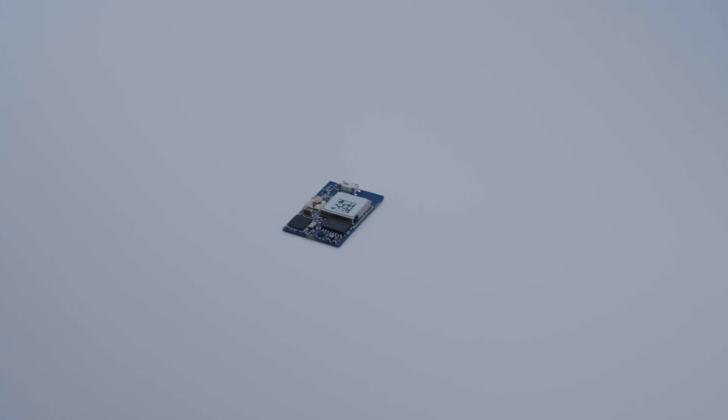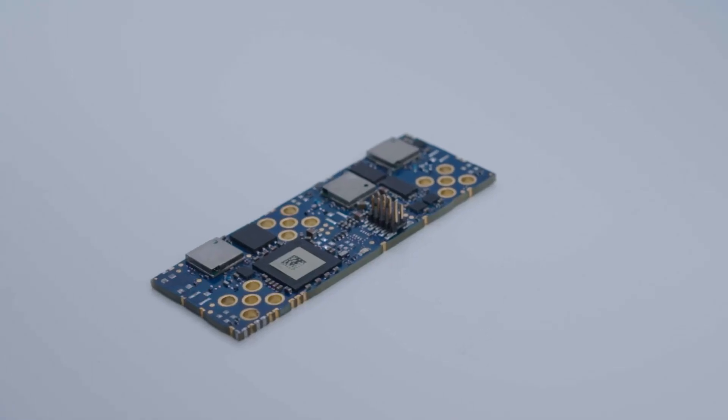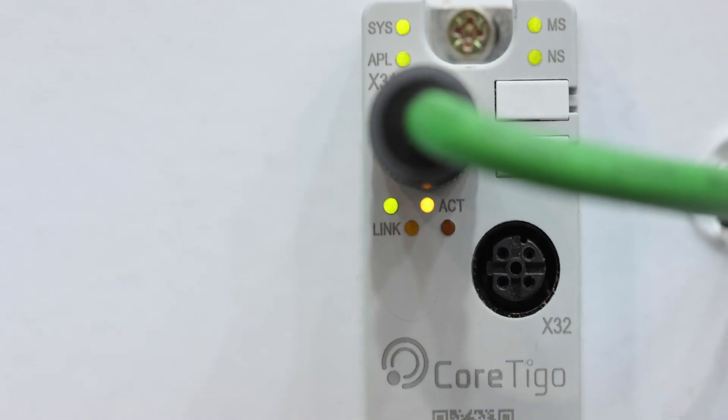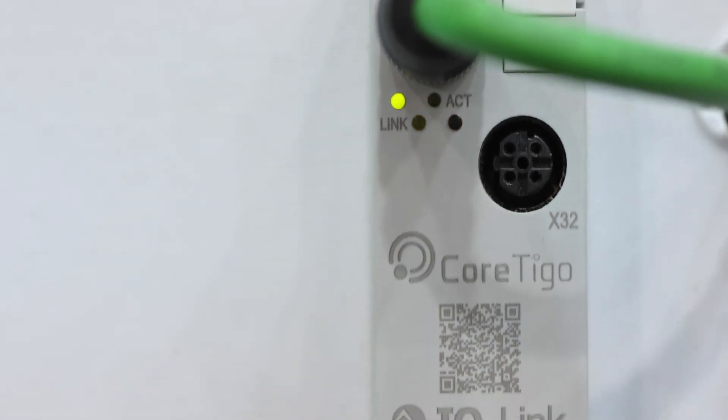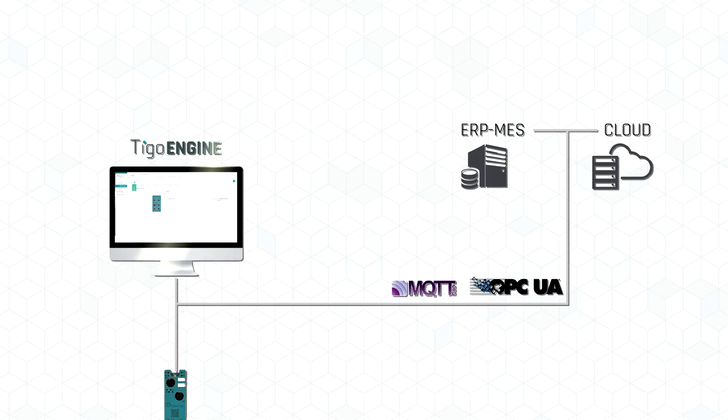Using TIGO Master embedded modules, manufacturers can design their own IO-Link wireless masters or embed them into PLCs for IO-Link wireless capabilities.